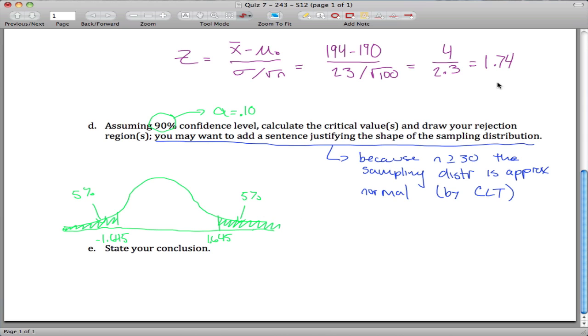And the key point here is that this test statistic, this 1.74, is bigger than 1.645. If you think about where this falls in our picture, this is not to scale because I want to emphasize that it's out here. But my test statistic is over here in the rejection region.